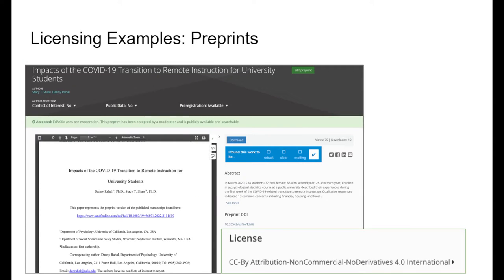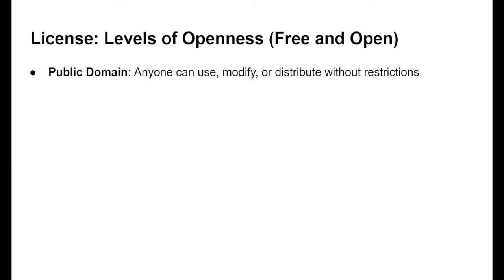We can break licenses down by how open they are. The first category is free and open licenses. The least restrictive of these is public domain, where anyone can use, modify, or distribute without restrictions — for cases where you want to release something so common that everyone uses it without requiring citation. The most common public domain licenses are CC0 (Creative Commons Zero) and the Unlicense, which is another form of public domain dedication.